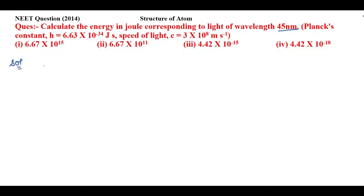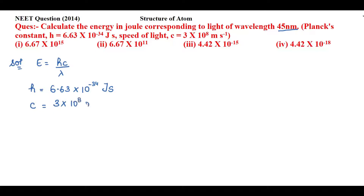For this question we will use the relation E = hc/λ. The given values are: h (Planck's constant) = 6.63 × 10⁻³⁴ joule·second, c (velocity of light) = 3 × 10⁸ meter per second, and λ = 45 nanometers. The velocity of light is in meters but wavelength is in nanometers, so we need to cancel the units.